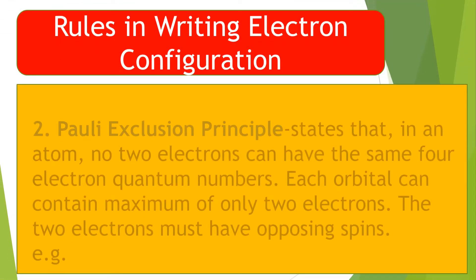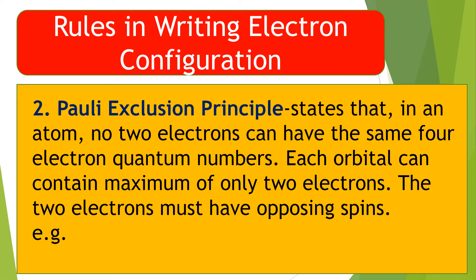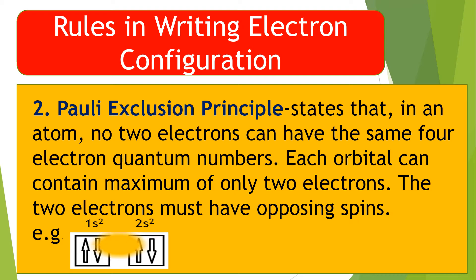Rule 2: The Pauli Exclusion Principle states that in an atom, no two electrons can have the same four electron quantum numbers. Each orbital can contain a maximum of only two electrons. The two electrons must have opposing spins. Take a look at the example below.